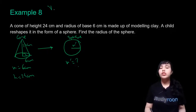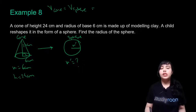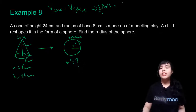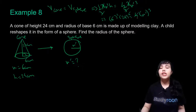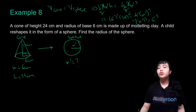The principle of conversion says volume will remain the same, so volume of cone equals volume of sphere. Volume of cone is (1/3)πR²H, and volume of sphere is (4/3)πR′³. The 3s and πs cancel, giving R²H = 4R′³. Substituting: 6² × 24 = 4 × R′³. This gives R′³ = 6³. Taking cube root on both sides, R′ = 6 centimeters.